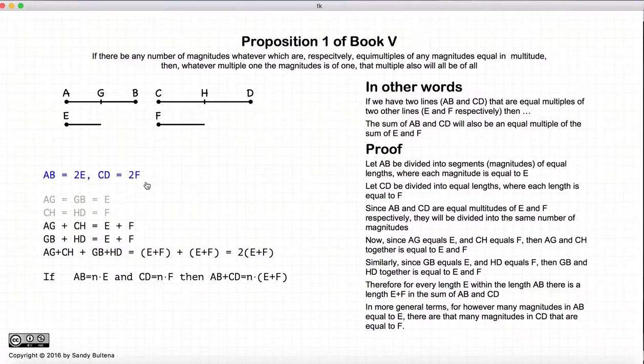So in more generic terms, again, for every segment here, there will be a segment here. And as we add these two segments together, that will be equal to one addition of the E and F.